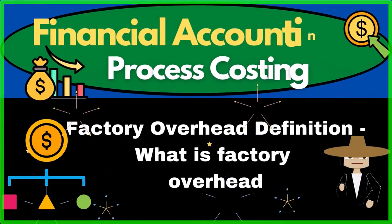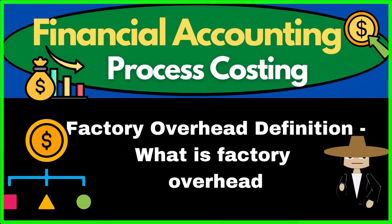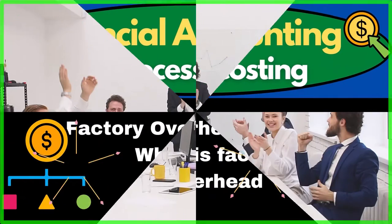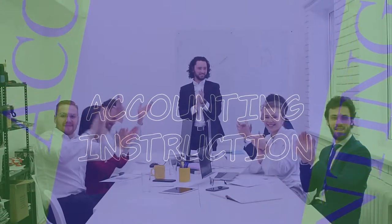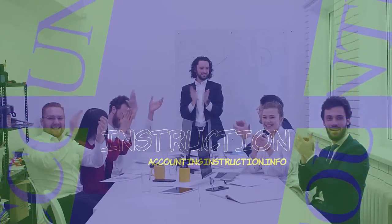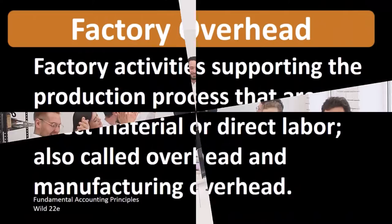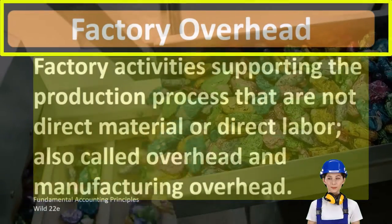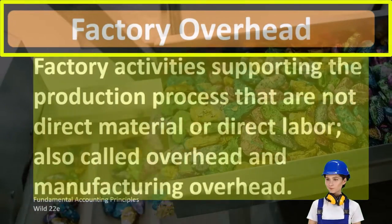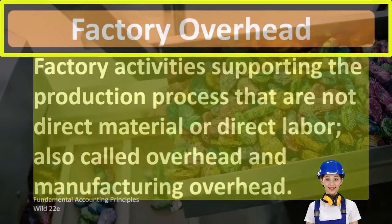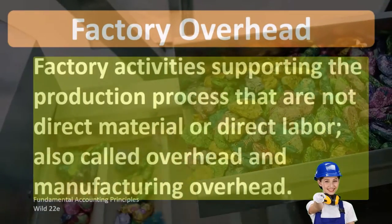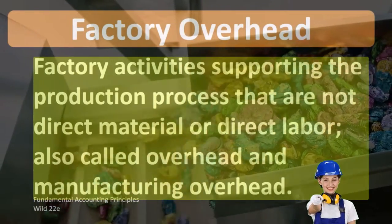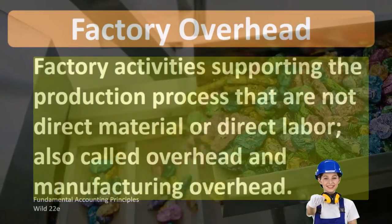Hello. In this lecture we will define factory overhead. According to Fundamental Accounting Principles, WILD 22nd Edition, factory overhead is defined as factory activities supporting the production process that are not direct materials or direct labor, also called overhead and manufacturing overhead.